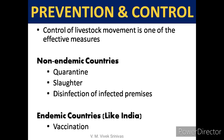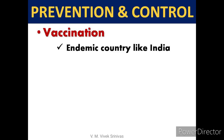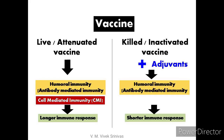For prevention and control: control of livestock movement is an effective measure. In non-endemic countries, quarantine, slaughter, and disinfection of infected premises are followed. In endemic countries like India, vaccination is the best way to control this infection. Traditional viral vaccines are of two types: attenuated vaccines, which confer both humoral and cell-mediated immunity for a longer period, and inactivated vaccines, which confer only humoral immunity for a shorter period and require adjuvants and repeated revaccination.